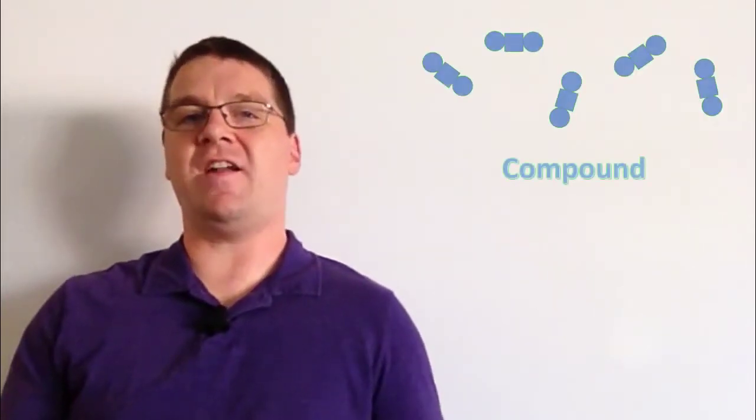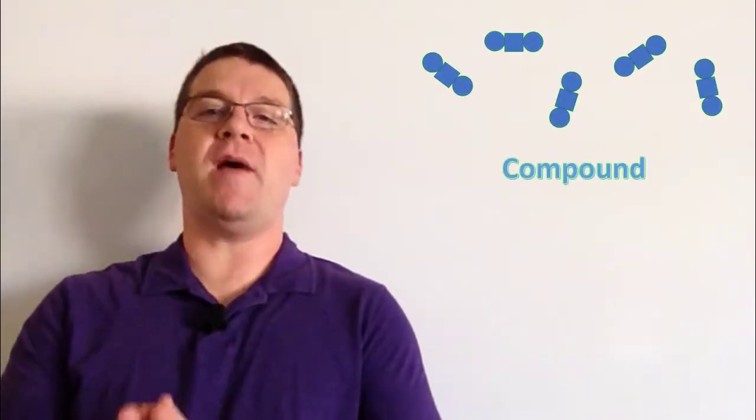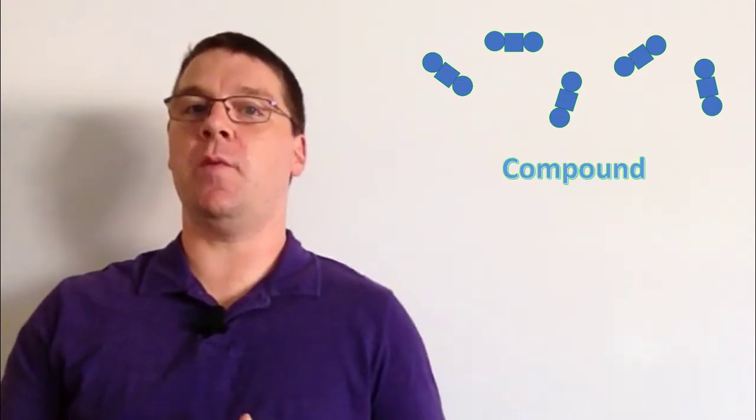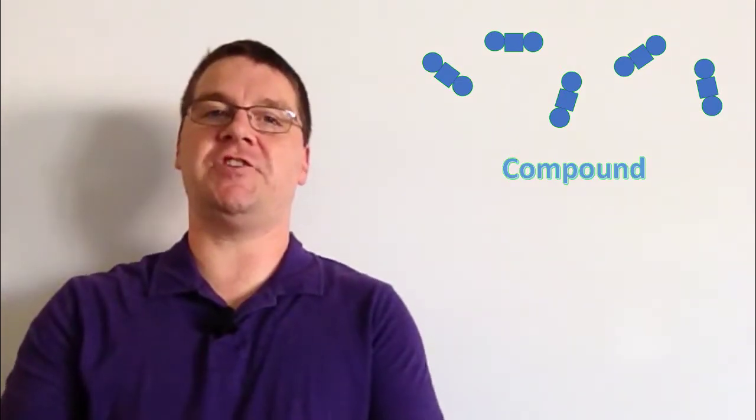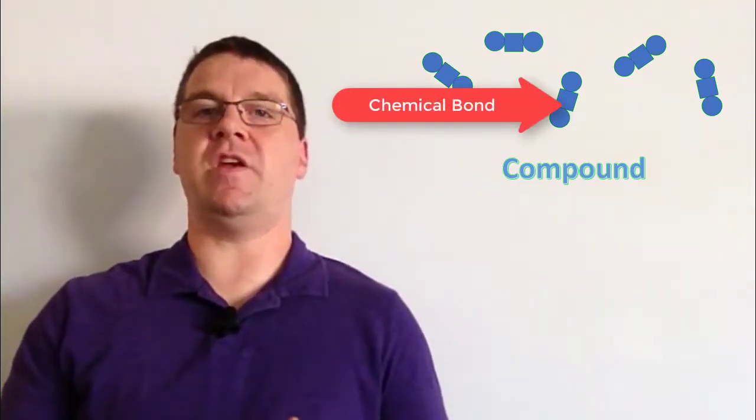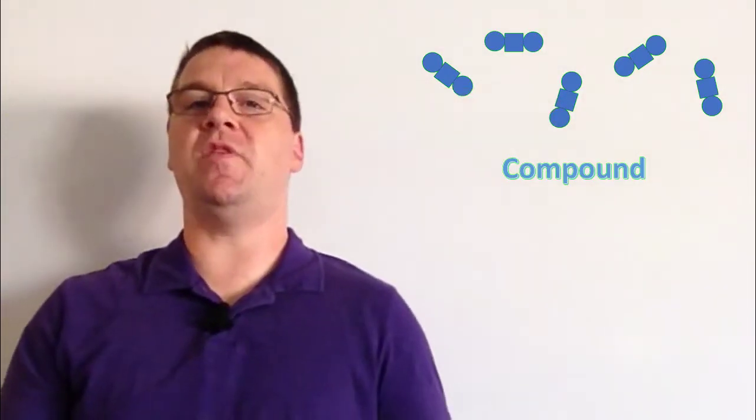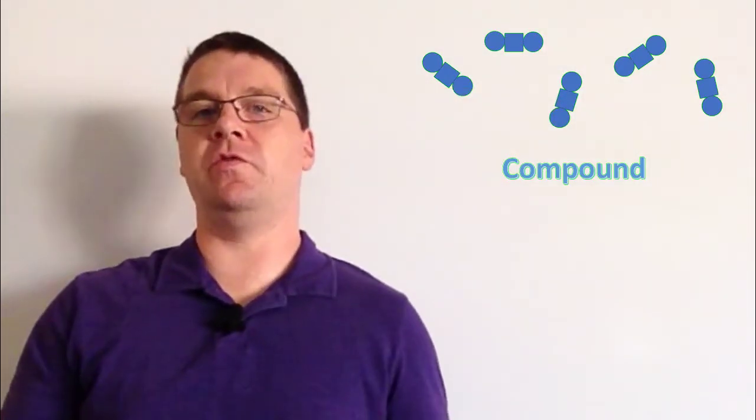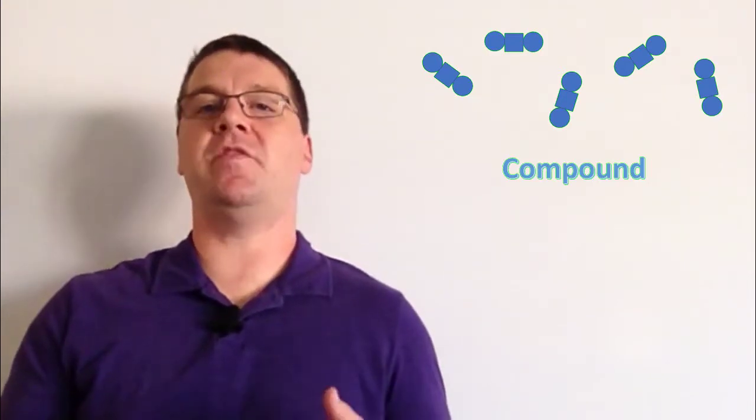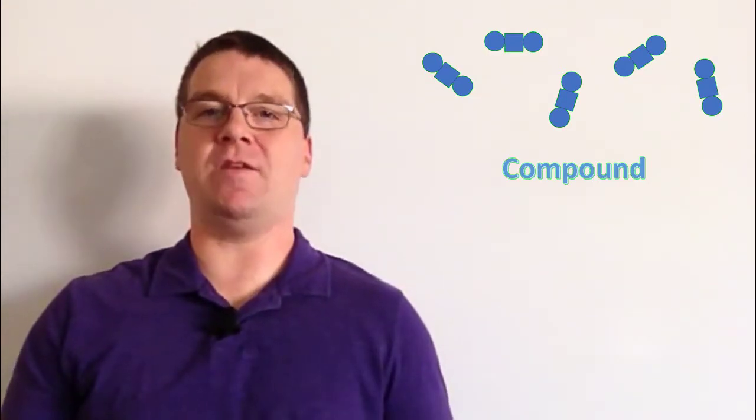In the particulate diagram for a compound we see groups of atoms that are chemically bound together. The way that is usually represented is the symbols are physically touching, and that's understood to be a chemical bond. So a compound would be represented by several particles that are all the same type but they're each made up of multiple atoms of different types that are chemically bound together.